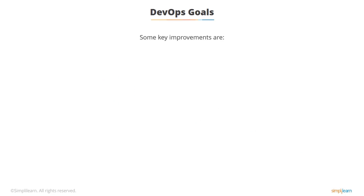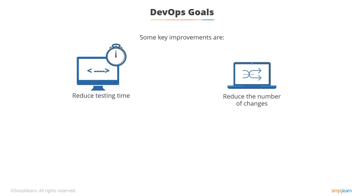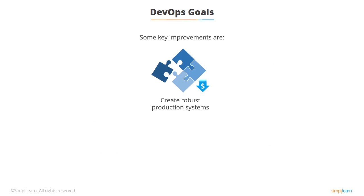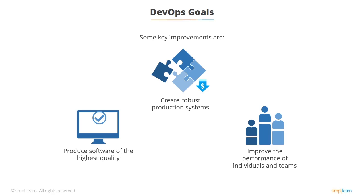Some important improvements include reducing testing time — that doesn't mean reducing testing, it means reducing the time that the tests actually run. Try to reduce the amount of changes required. When requirements are conflicting or incomplete, resolve those conflicts early on and find the simplest solution to meet the requirements — not necessarily the optimal solution, but the best solution that works well. Use standard tools across the organisation which integrate well together. Have robust production systems with very low maintenance costs and high reliability, and produce software to the highest possible quality. To achieve this, improve the performance of individuals and teams and how they work together.